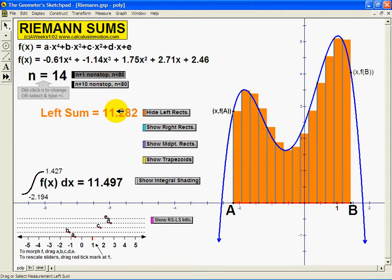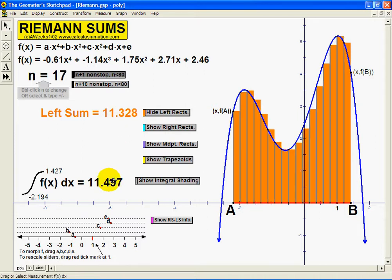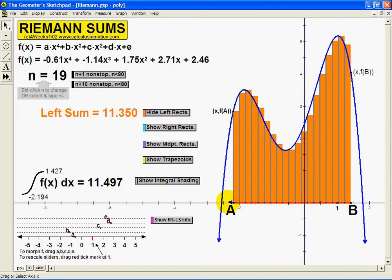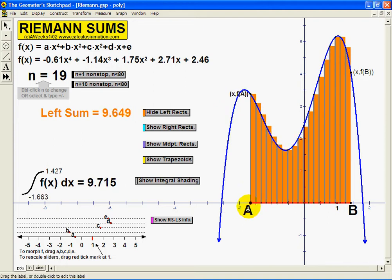At all times, the Riemann approximation is displayed along with the actual integral value. At any time, the domain can be changed by dragging either points A or B.